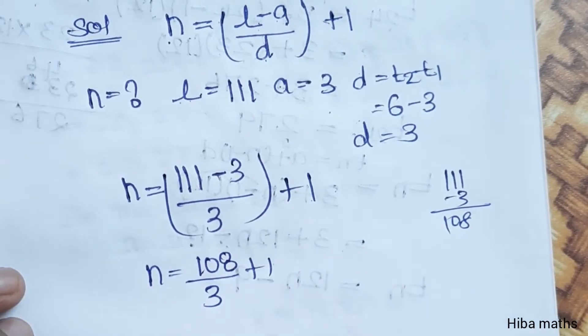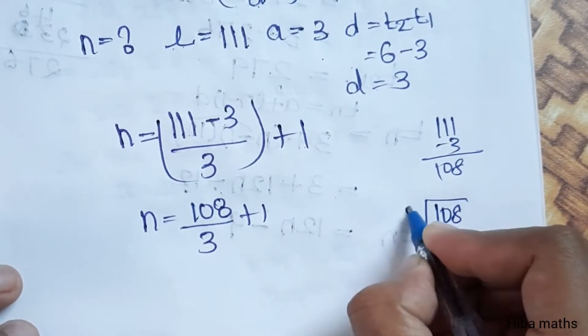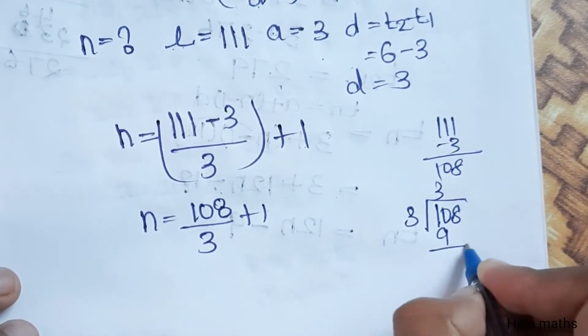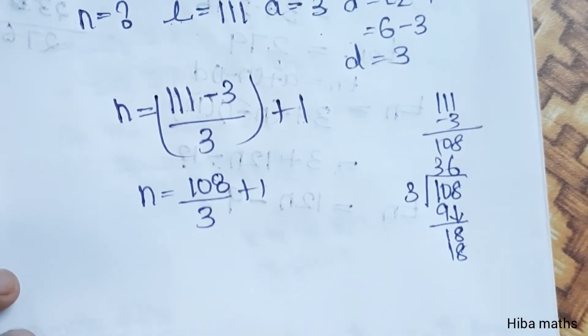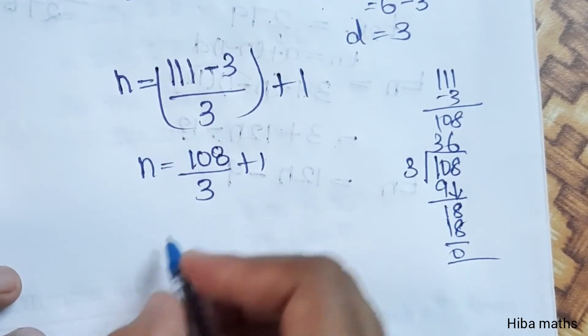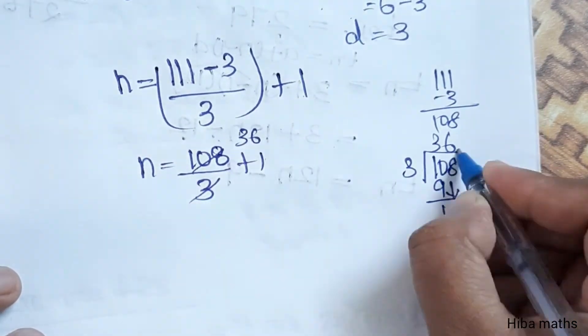108 divided by 3, plus 1. I'll divide: 3 into 10 goes 3 times, balance 1. 3 into 18 goes 6 times, remainder 0. So 36 is the quotient.